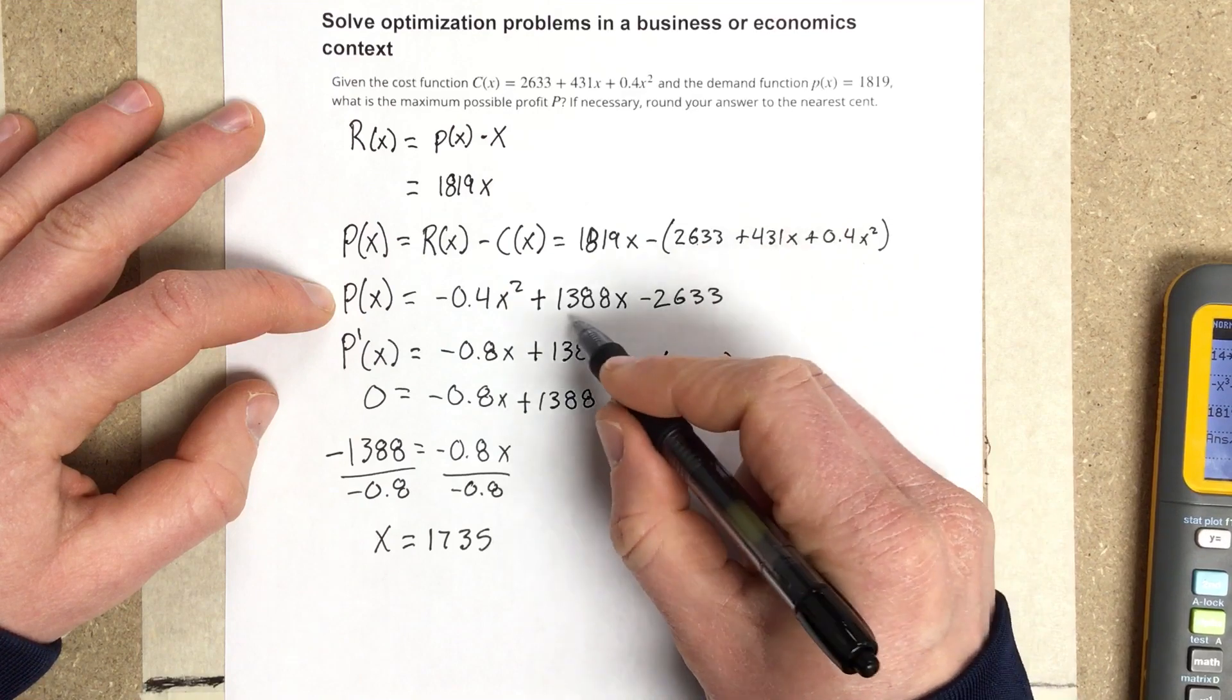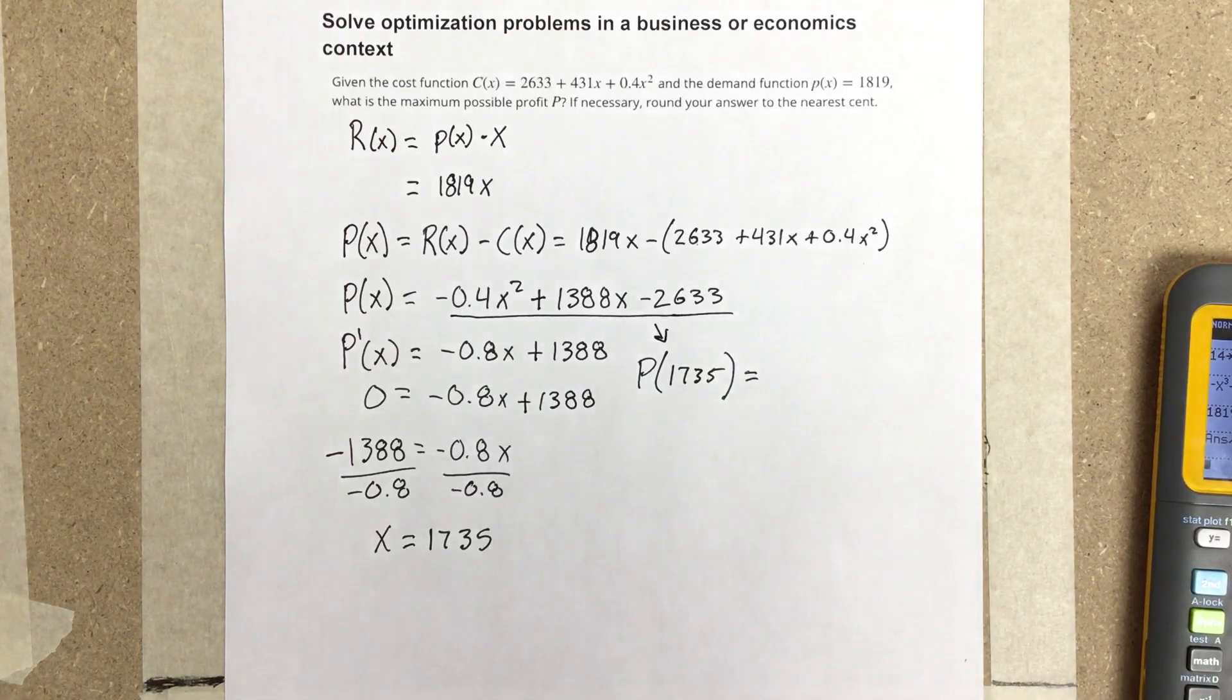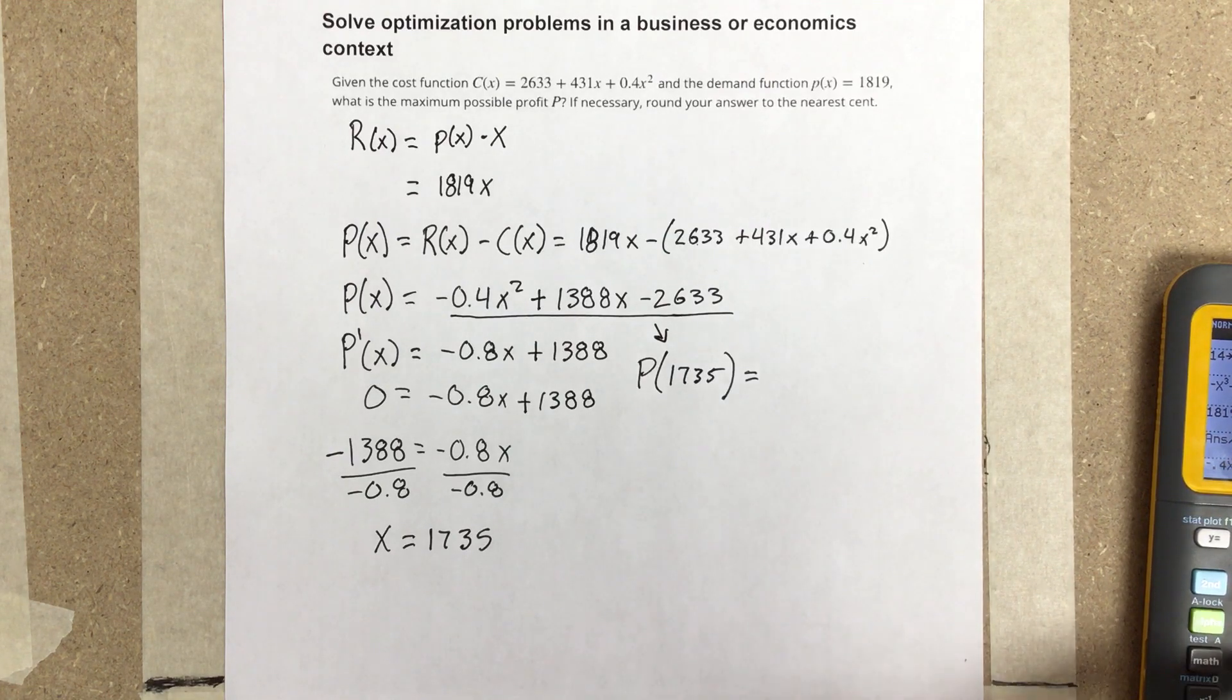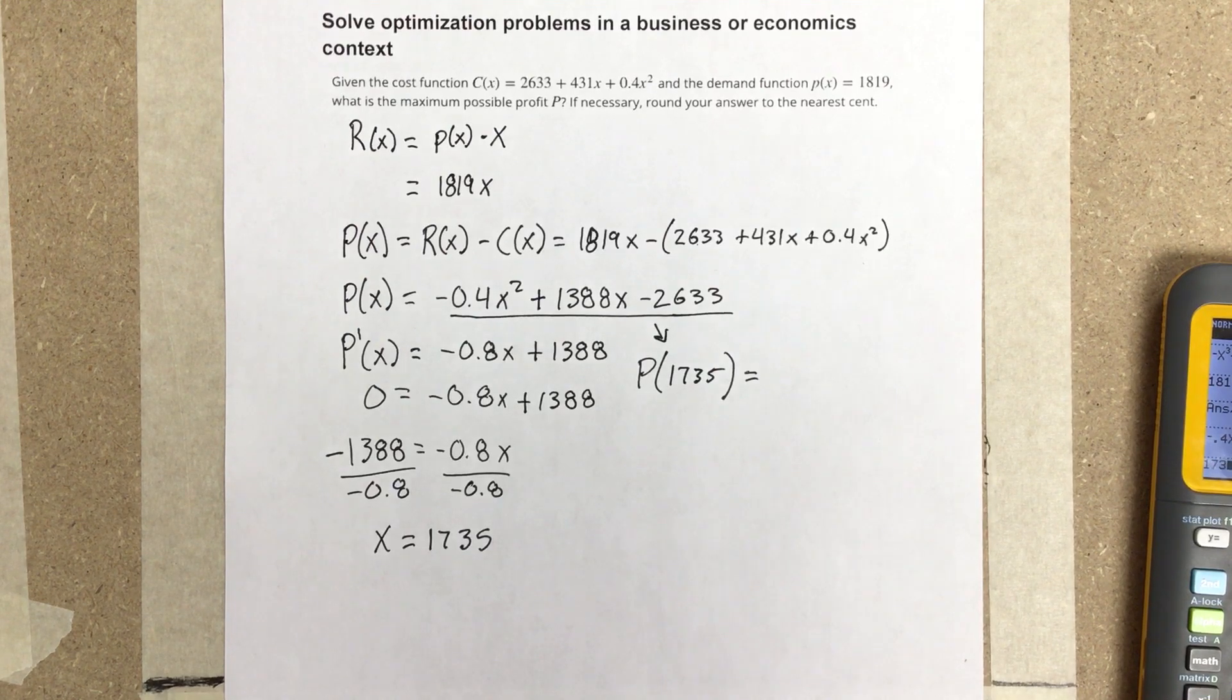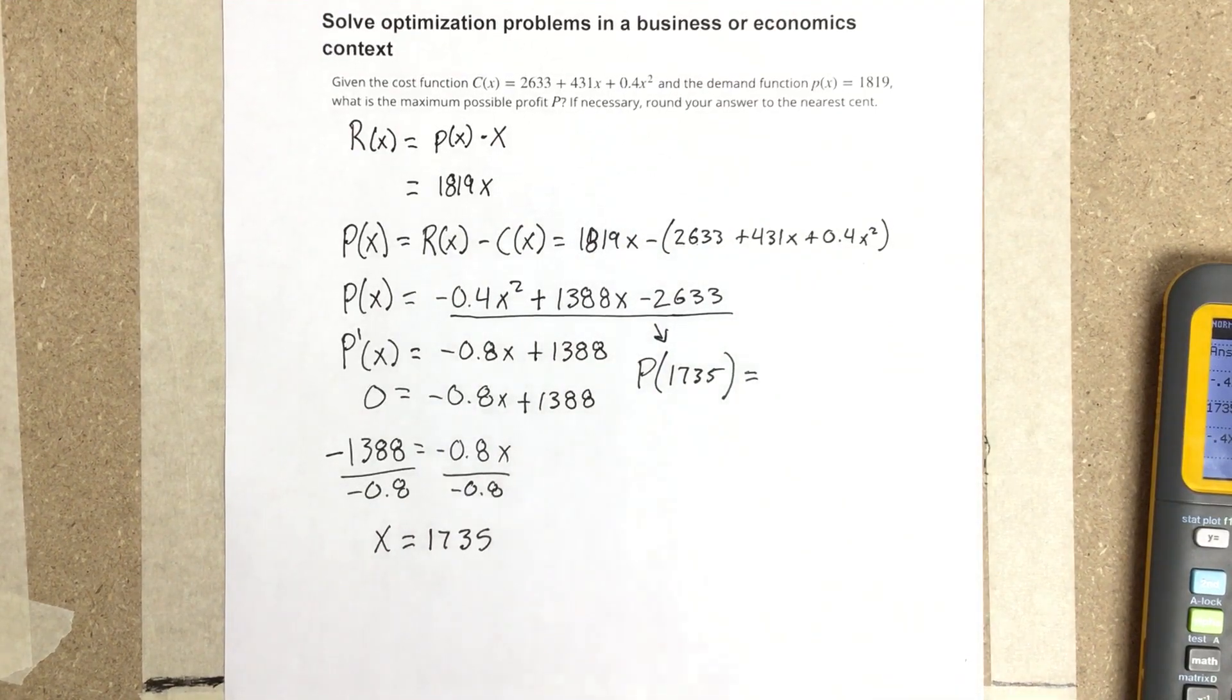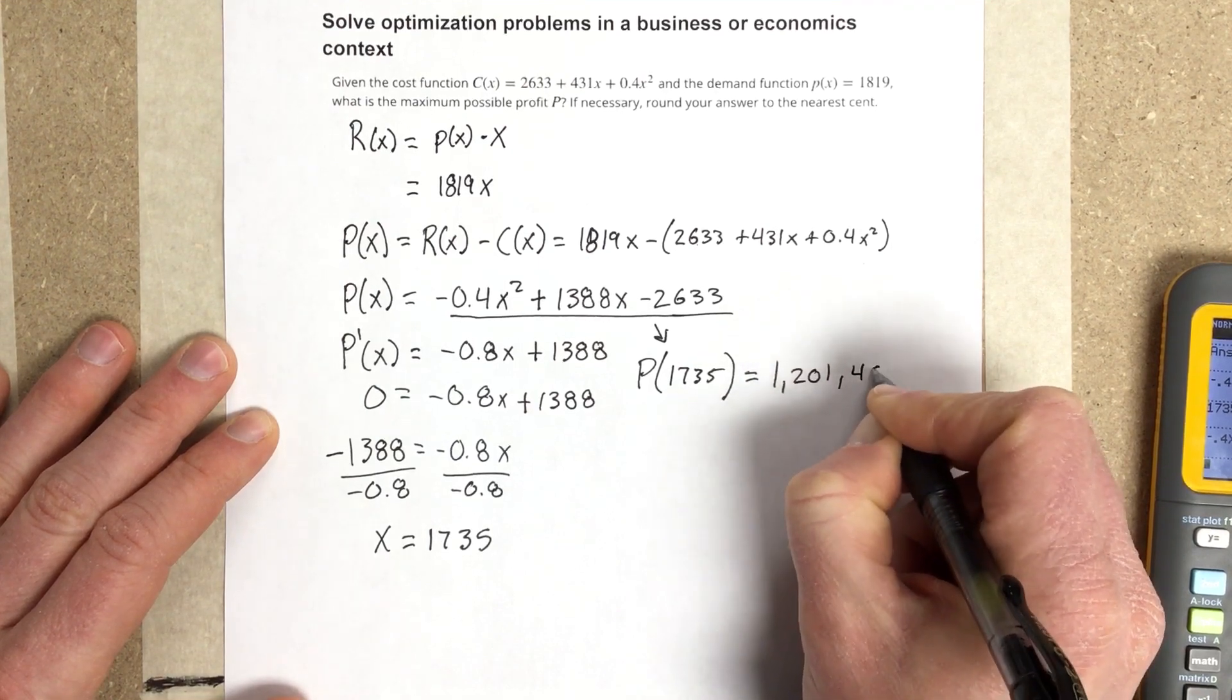Using the profit equation and plugging into the calculator: store 1735 into x, and we get $1,201,457. So the maximum possible profit is $1,201,457.